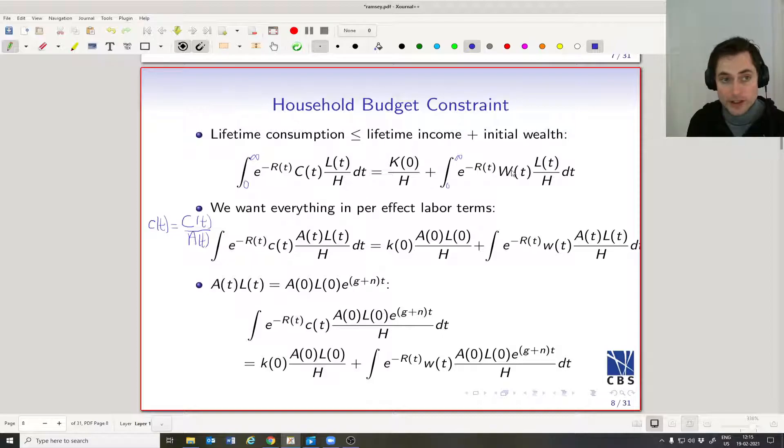And then finally, we have a wage here, wage per person. Let's make it wage per unit of human capital by dividing and multiplying by A_t in the same fashion as we did over here. So we could just write, just to have it on the slide, little w_t is equal to big W_t divided by A_t. So how do we say that in words? Little c_t is consumption per unit of human capital, and little w_t is the wage per unit of human capital.